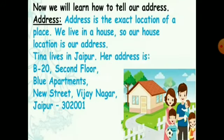Now, we will learn how to tell our address. Address is the exact location of a place. Address is a place where someone lives. We live in a house, so our house location is our address. Tina lives in Jaipur. Her address is B20,